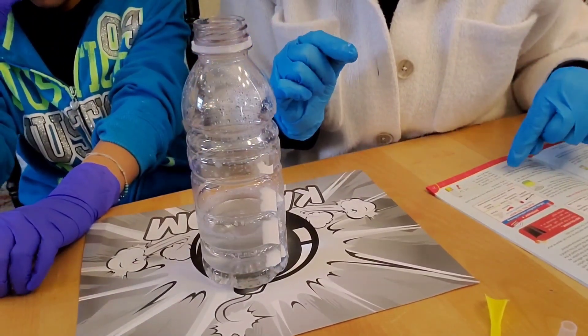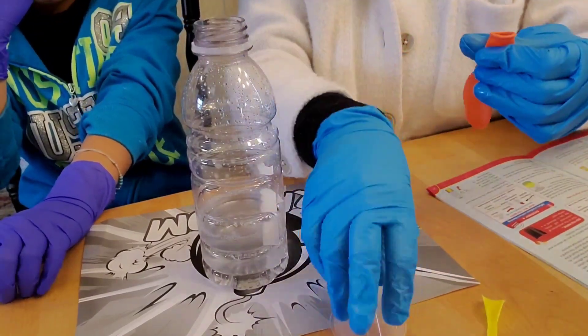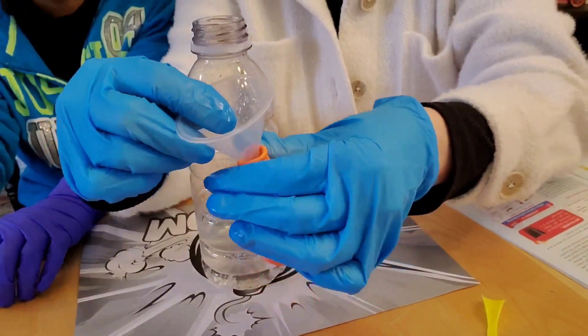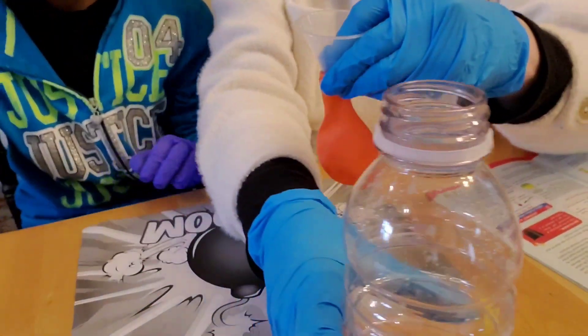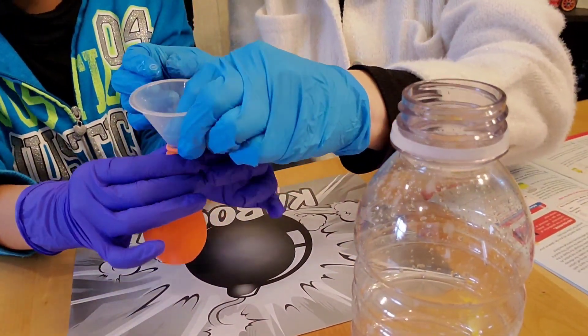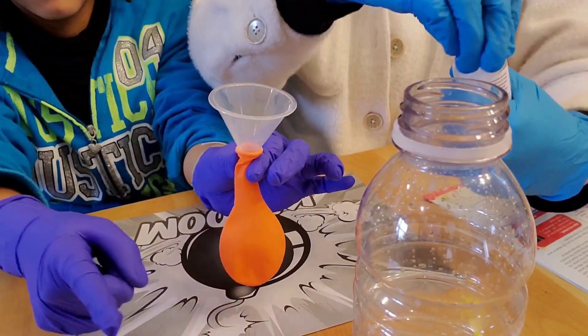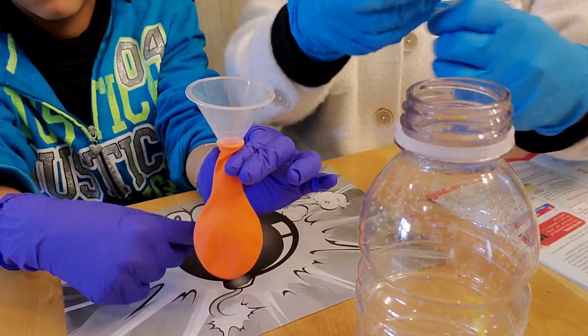Then it says the next thing we're going to do is we're going to fill this balloon, our little trusty balloon. That's what we're going to use our funnel for. We're going to put the funnel inside of there. So I'm going to have you help me. Let's move this out of the way. I'm going to have you hold this. And it says that I need to put three spatulas of sodium bicarbonate into the balloon.